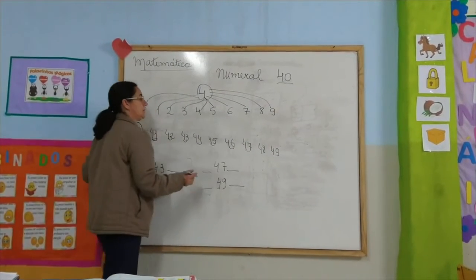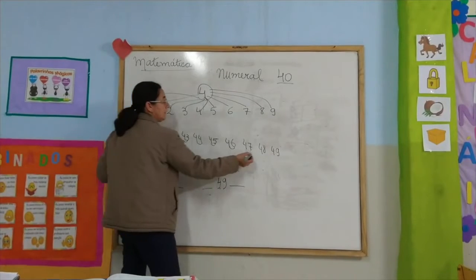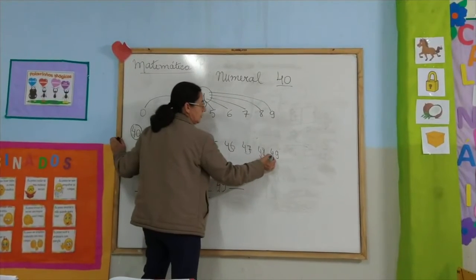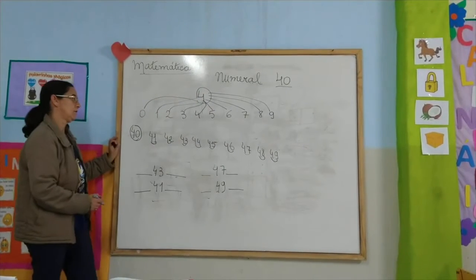40 and 7 is 47. 40 and 8 is 48. 40 and 9 is 49.